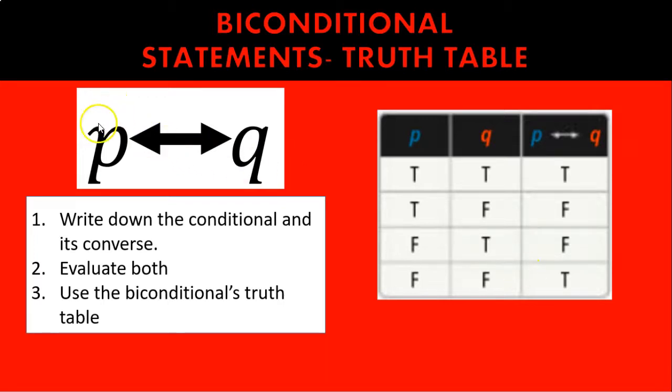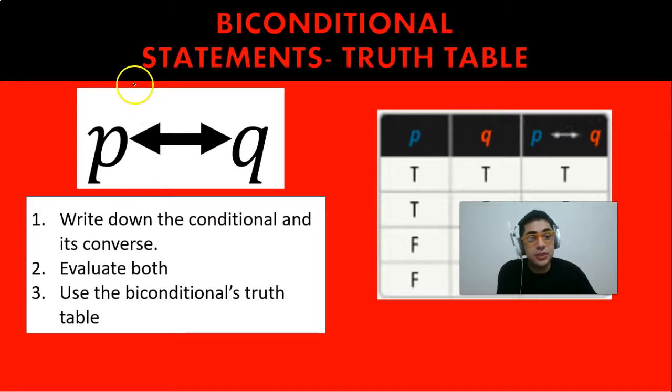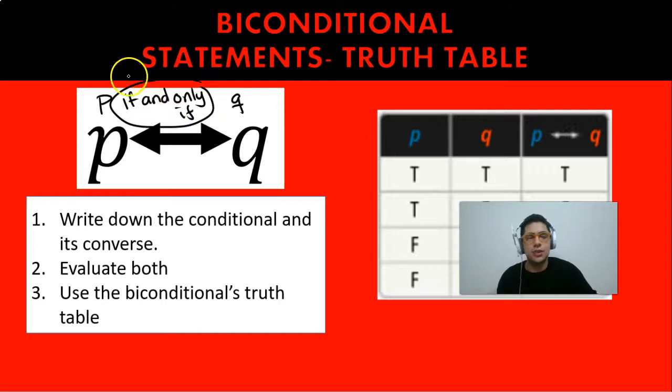So we have again the hypothesis which is going to be P and we have the conclusion which is going to be Q. Now the way in which we read this symbology here is that we write down P if and only if Q. So this is how we read this arrow which goes in both directions.